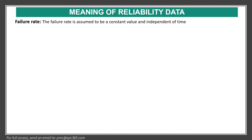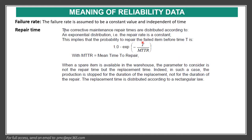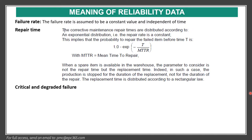The failure rate is assumed to be a constant value independent of time. Repair time — the corrective maintenance repair time — is distributed according to an exponential distribution, and the repair rate is constant. With mean time to repair, we have to identify and write it in the reliability data. Critical and degraded failure data can be obtained from OREDA.